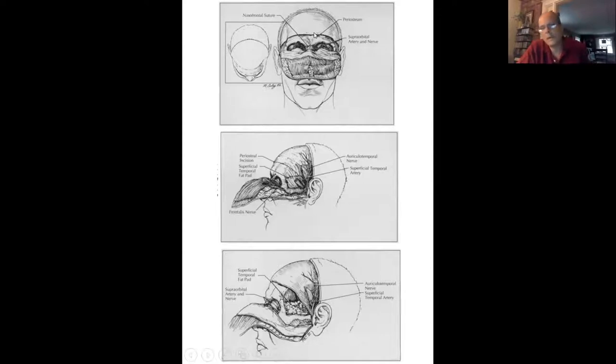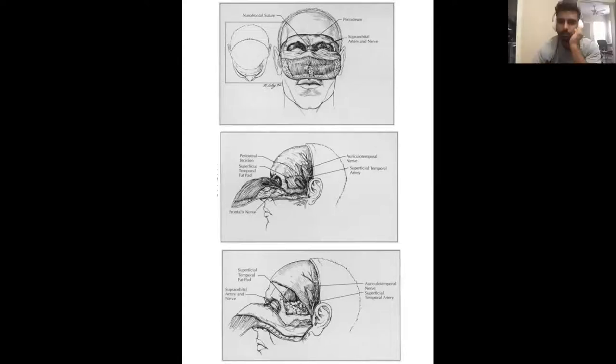An important thing from an anatomy point of view, the layers of the scalp. Everybody know the layers of the scalp? Anybody want to shout out what the five layers are? You got skin, connective tissue, aponeurosis, loose areolar tissue, and the periosteum.